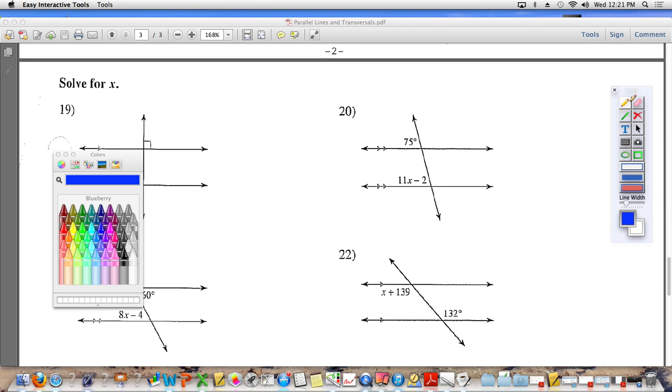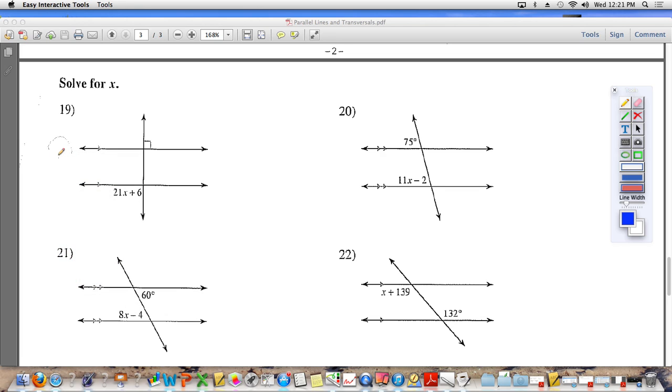Problem number 19 says solve for x. Now the angle that's marked here, 21x plus 6, and then this angle right here are called alternate exterior angles. And you guys know that alternate exterior angles are equal to each other. So we know that if I have 21x plus 6, it has to be equal to that angle right there, which is 90.